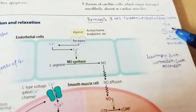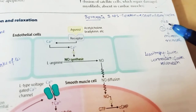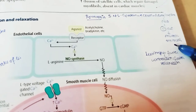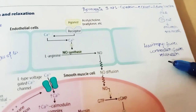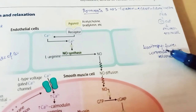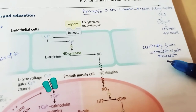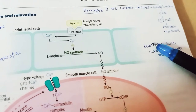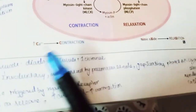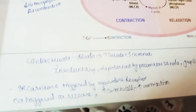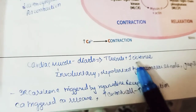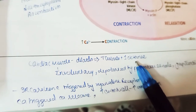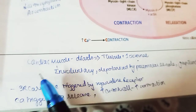Beta-1 receptors of the sympathetic nervous system (Gs protein) increase cyclic AMP, activating adenylyl cyclase and protein kinase A, which phosphorylates calcium channels for more contraction — and also causes lusitropy: faster contraction and faster relaxation, seen in cardiac muscles.